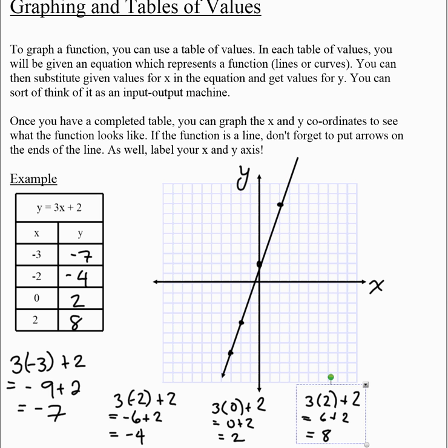Normally, when you have this, technically this line goes on forever in both directions. So we want to add arrows to the ends of our line to show that it really does keep going. We just graph those points, but the actual function does keep going.